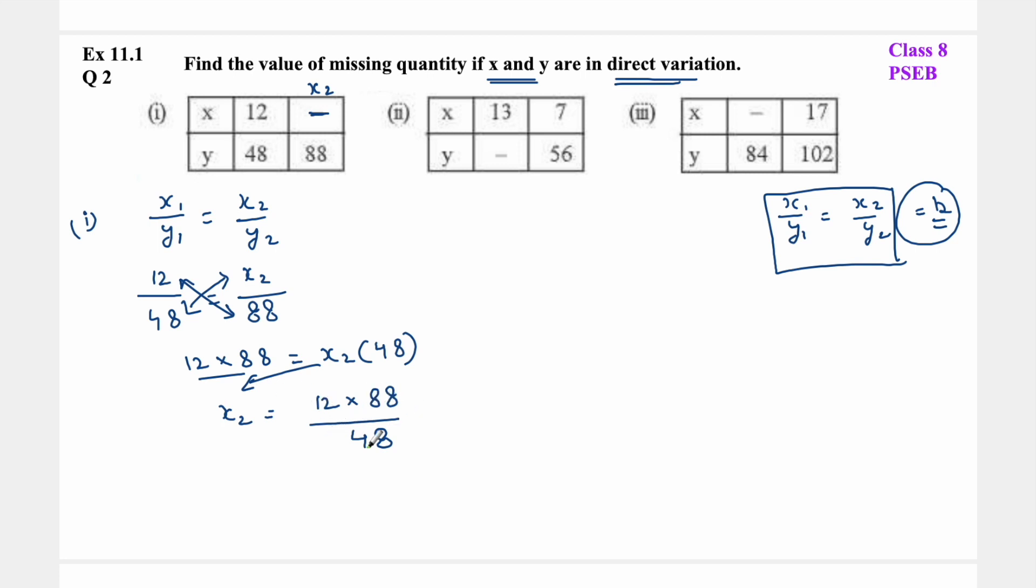Now simplify: 12 into 88 upon 48. Dividing, we get x2 equals 22. This is the answer. The missing quantity is 22.